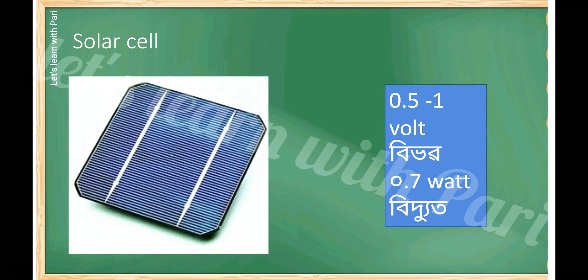If you have a solar cell, it's 0.5 and 0.7. For this, you can use it.